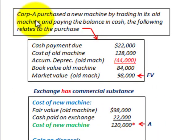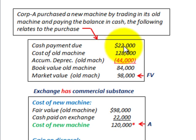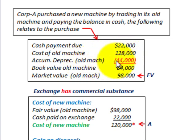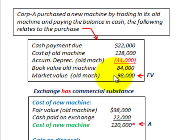In our example, Corporation A purchased a new machine by trading in its old machine and paying the balance in cash. We're given a cash payment due on the exchange, the cost of the old machine, and the accumulated depreciation of the old machine — subtracting that from cost gives us the book value. We also need the market value, or fair value, of the old machine, which is given as $98,000, while the book value is $84,000.